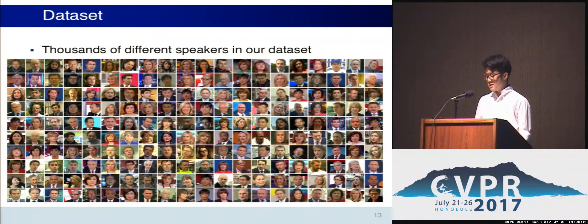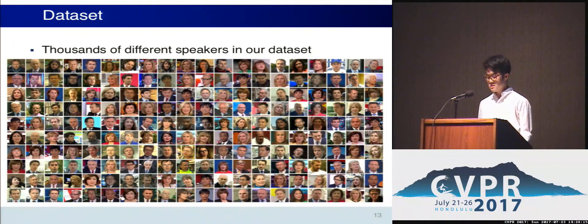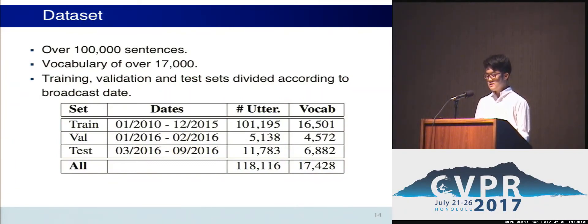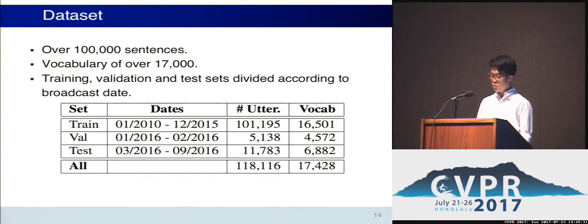These are some of the faces that appear in our dataset. The large number of speakers helps the trained model generalize better to unseen identities. Our dataset contains over 100,000 sentences and over 17,000 different words, split into train, validation, and test sets by broadcast date, so that we don't test on videos seen during training.